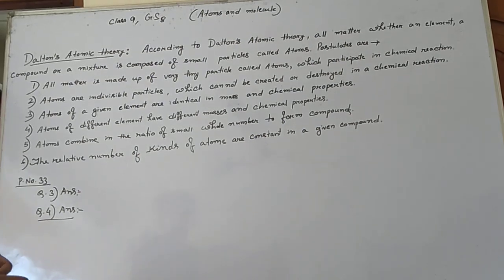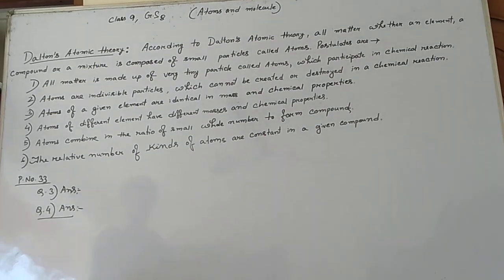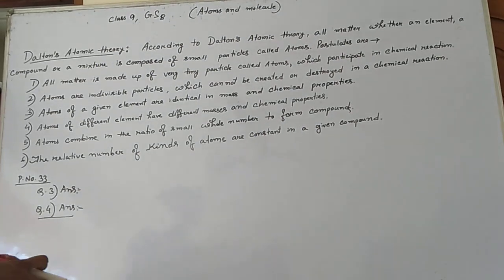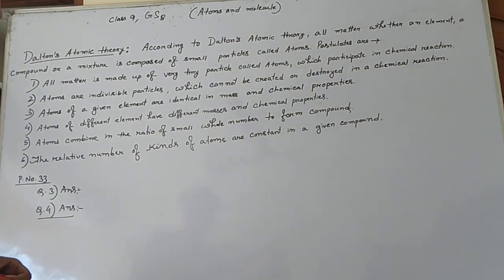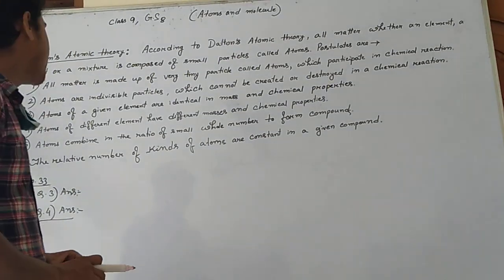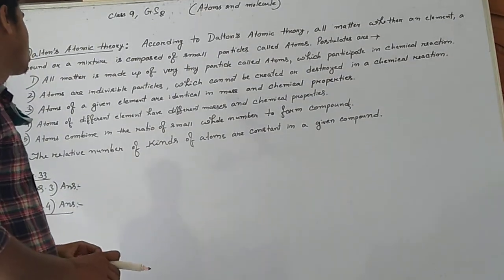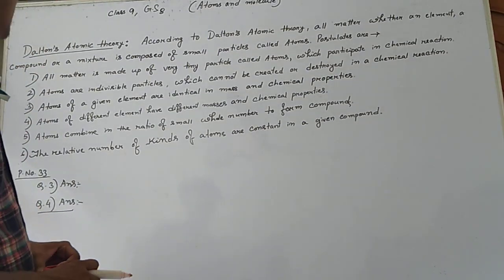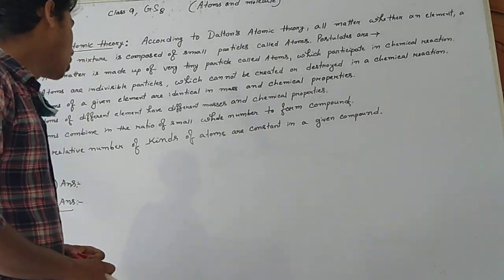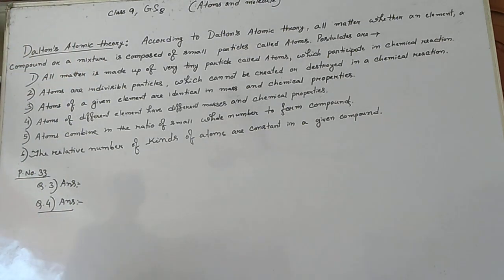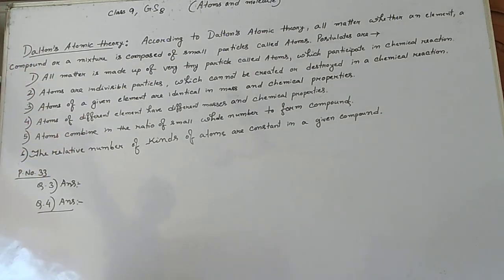Students, we have studied in our last video about the law of chemical combination — two laws we discussed: conservation of mass and law of constant proportion. Now after that, Dalton gives a theory called Dalton's atomic theory.